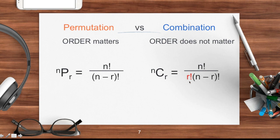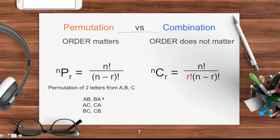For example, permutation of two letters from A, B, C — since order matters, A-B and B-A are counted differently, A-C and C-A are different, B-C and C-B are totally different. So we have a total of six permutations when order matters.